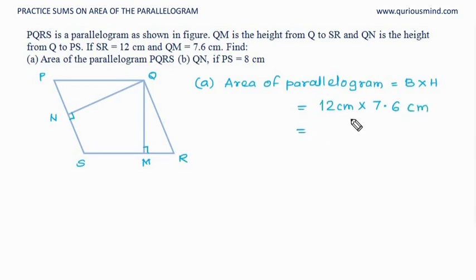So that gives us 12 times 6 are 72, 2 carry forward is 7. 12 times 7 are 84, 84 and 7, 91. So 91.2 cm square.